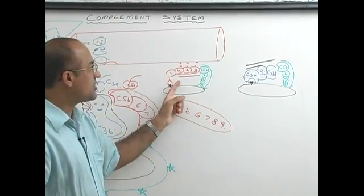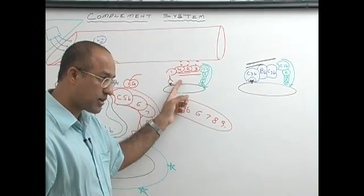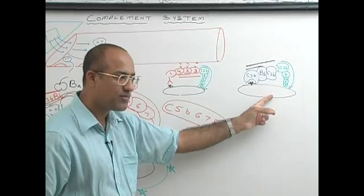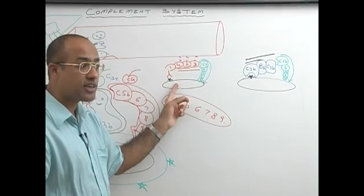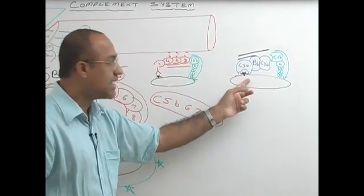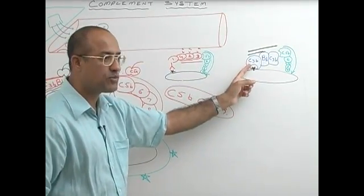Alternate pathway. This is activated later once antibodies are produced against the bacteria, this is activated immediately as soon as bacteria invade your body, right? This pathway is dependent on presence of IgG, IgM, this pathway is activated without antibodies.